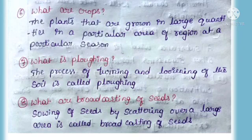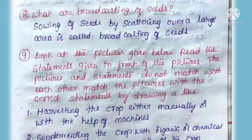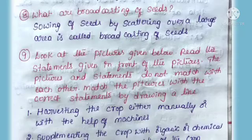Seventh question: What is plowing? Answer: The process of turning and loosening of the soil is called plowing. Eighth question: What is broadcasting of seeds? Answer: Sowing of seeds by scattering over a large area is called broadcasting of seeds.